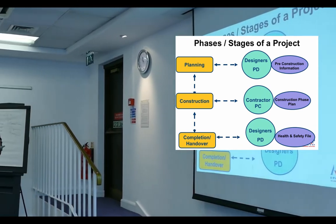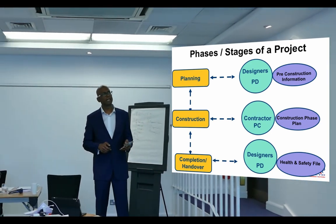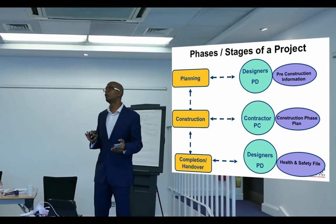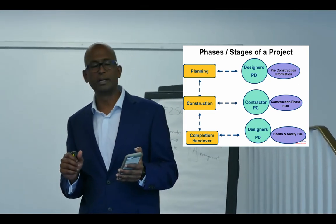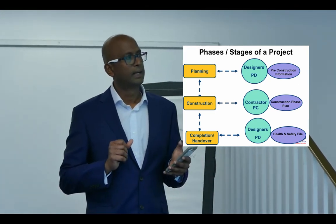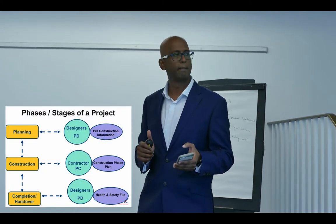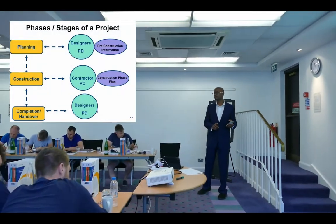There are three key documents where you provide all evidence of managing the whole project. The first is pre-construction information, pulled together largely by the principal designer. The second document is the construction phase plan — straightforward, at the construction phase. The third document is the health and safety file, which we covered earlier. So: three phases, duty holders who manage each, and three documents as records.